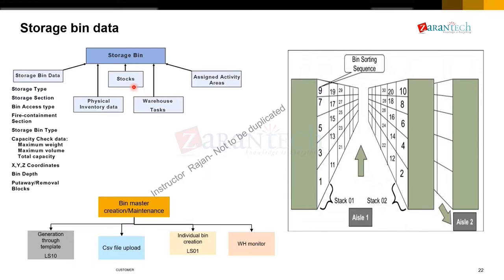There's a stock tab where you see multiple records — unlike ECC WM, there's no quant number in EWM. If you see 10 records in the stock tab, that means 10 different quants are in the bin. Each record signifies a quant. There's no quant number or dynamic quant number concept in EWM — it's all stored in LIME (Logistics Inventory Management Engine). Bins can also be assigned to multiple activity areas, and there's a tab showing open warehouse tasks or picking tasks from the bin's perspective.